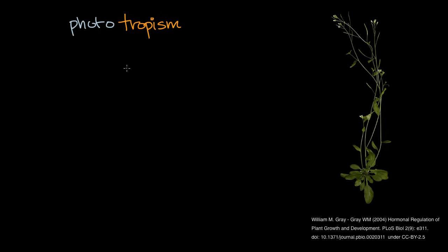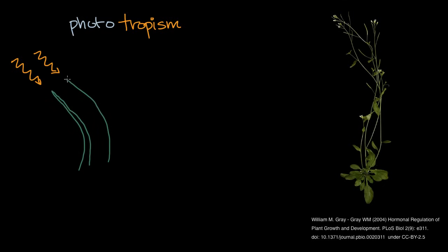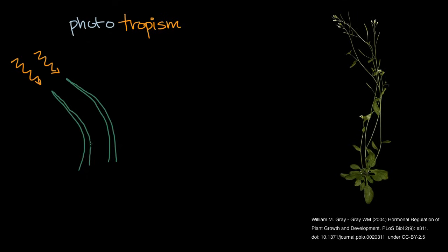It could be moving towards the light or it could be moving away from the light. If you were to go see a forest, you'll see there might be an opening in the canopy where the light is coming, and you'll often see trees and plants growing towards that light. This would be called positive phototropism. If some plant was moving away from the light, that would be negative phototropism, which is a lot less usual, especially for the stem of a plant.